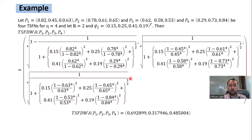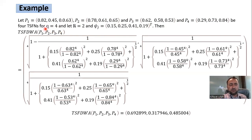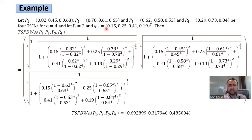Here is an example to illustrate the TSFDWA operator. We have four T-spherical fuzzy numbers P1, P2, P3, and P4. For Q equal to 4, all these triplets are T-spherical fuzzy numbers. We select R equal to 2, though R is flexible and can be set to 3, 4, 5, and so on — changing R may affect the ranking results in the decision-making process. Wj is the weight factor of the four T-spherical fuzzy numbers. Applying the TSFDWA operator, the result is also a T-spherical fuzzy number.